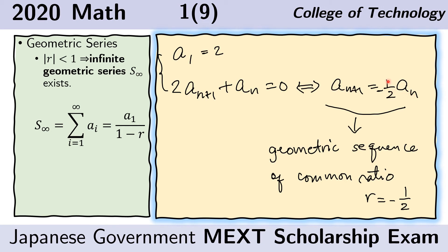the other side would be negative 1 half of a sub n. That means that if we have the term a sub n, then the next term must be a sub n times negative 1 half.